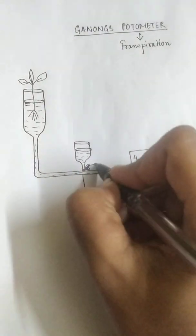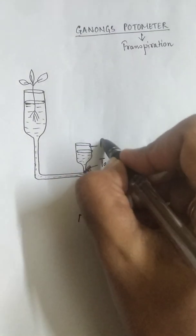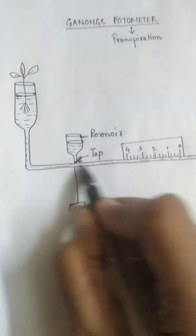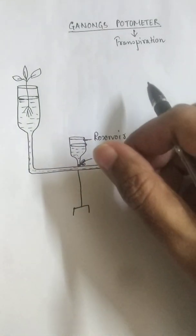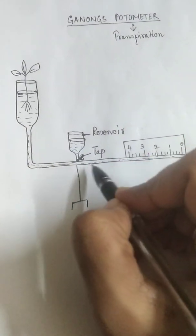But the only thing is that there is a tap over here. There is a tap over here and this tap regulates the flow of the water from this reservoir into this tube, long slender tube.